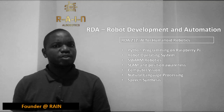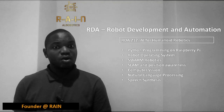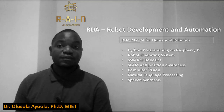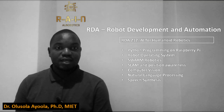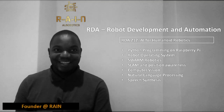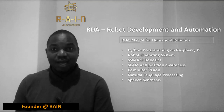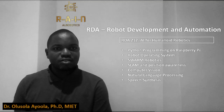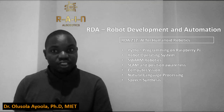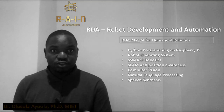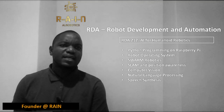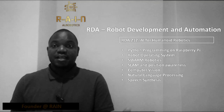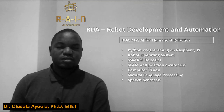RDA 212 is yet another course where we delve into the murky waters of artificial intelligence. Here you will learn how to make your robot see, feel, hear, speak and even make decisions. This course also includes SLAM-based position awareness, navigation control, and the use of ROS packages for robot coordination. The official programming language in this course is Python.